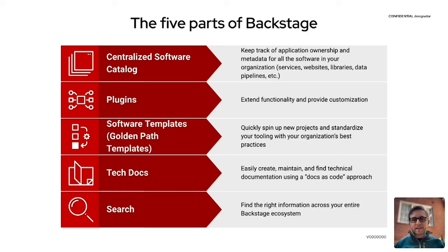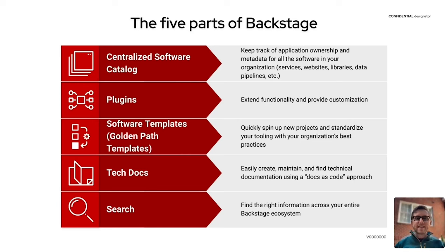Next up is software templates, or golden path templates. This is a lightweight automation system that allows you to quickly spin up new projects and standardized toolings. It takes your organization's best practices and creates a self-service experience for developers. For example, if they need a new namespace in OpenShift, instead of filing a support ticket and waiting days, they fill out a software template and it takes care of the rest using your existing automation framework. Next is tech docs — documentation represented as markdown files that live in the repository of the resource being documented. Backstage keeps that information in sync and renders it in the UI.